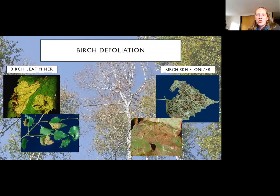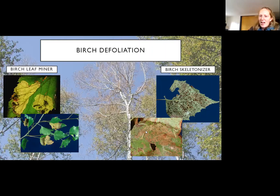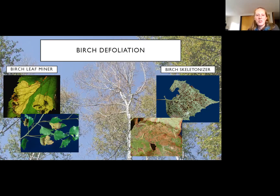There are a couple of birch defoliators: birch leaf miner, which mines between the leaves, and birch skeletonizer, which eats out the cells and photosynthesis of a leaf. When you look up at a birch tree it's pretty difficult to tell which one it is, but if you find the leaf on the forest floor you can take a look. Yard trees are sometimes sprayed with BT, which targets caterpillars. In a forest, we promote diversity and different age classes to buffer these effects.